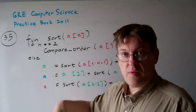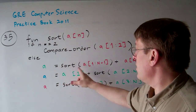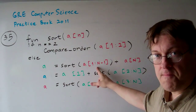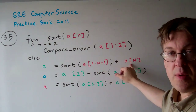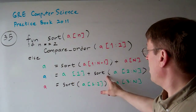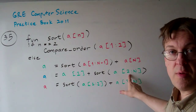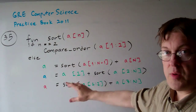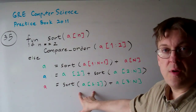If n is not equal to two — whether it's three, four, five, or however many — we sort the first n minus one elements of the array and tag on the last element without sorting it. Then we sort the last n minus one elements and append the first element to the front without sorting it. Finally, we sort the first two numbers in the array.